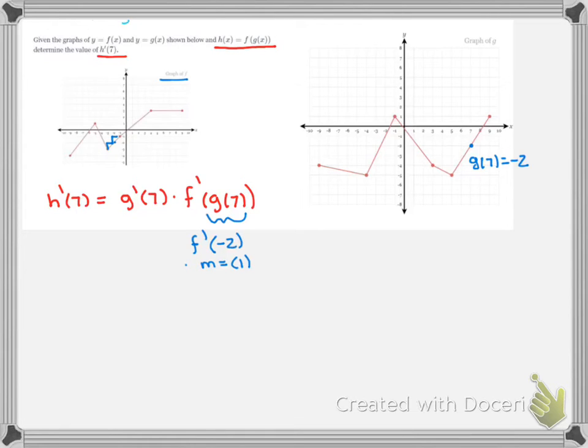Looking at the G graph at x = 7, we need the slope of this line. This time we're going up 2 over 1. The rise is 2, the run is 1, so G'(7) equals 2.